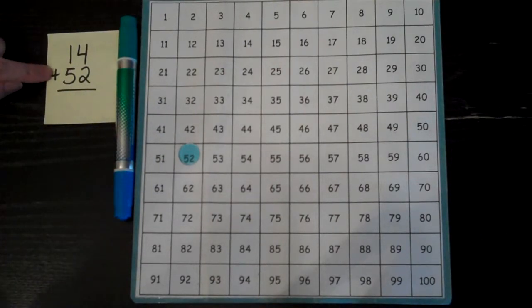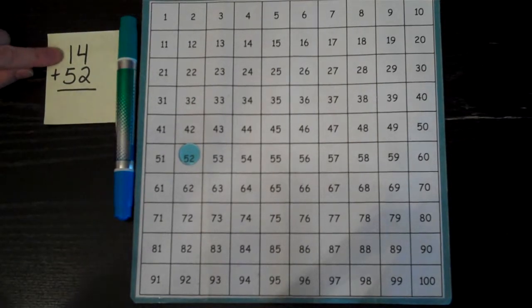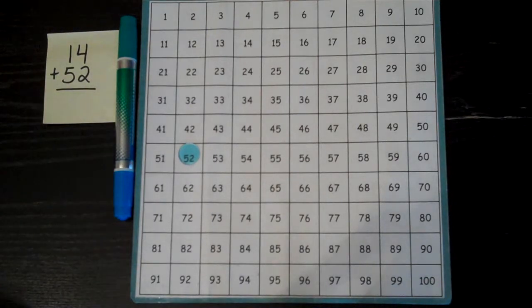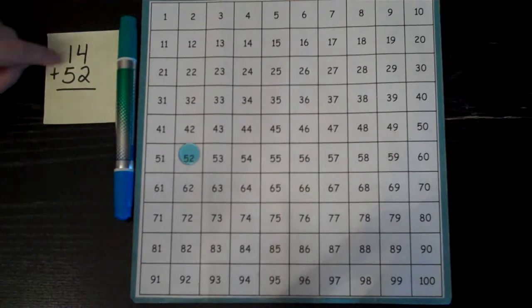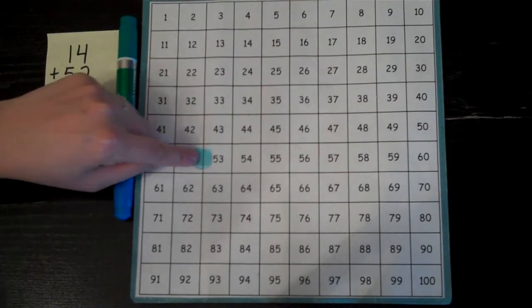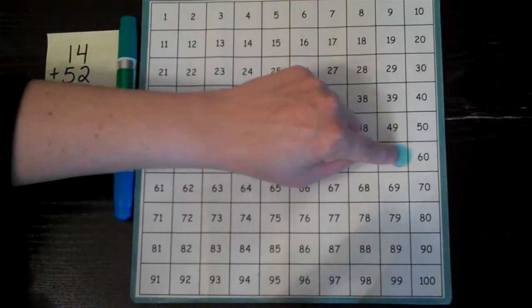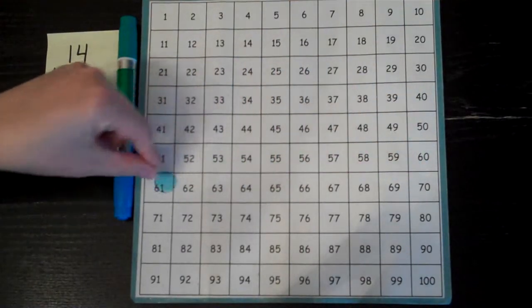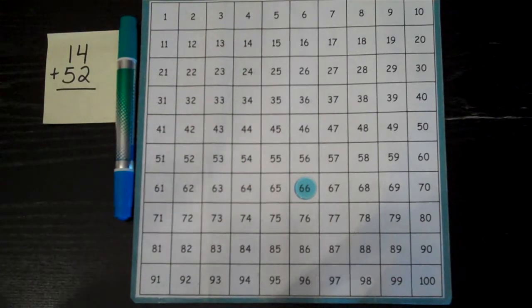Add tells me that I need to be going forward. The number needs to be getting bigger. I'm counting on, so I'm going to count on 14. One way to do that is just simply count on 14 times. So let's try that. Start at 52: 1, 2, 3, 4, 5, 6, 7, 8, 9, 10, 11, 12, 13, 14. I get to 66.